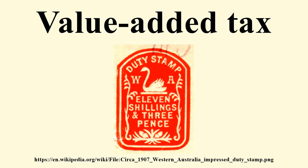In theory, sales tax is normally charged on end users. The VAT mechanism means that the end user tax is the same as it would be with a sales tax. The main disadvantage of VAT is the extra accounting required by those in the middle of the supply chain. This is balanced by the simplicity of not requiring a set of rules to determine who is and is not considered an end user. When the VAT system has few, if any, exemptions such as with GST in New Zealand, payment of VAT is even simpler. A general economic idea is that if sales taxes are high enough, people start engaging in widespread tax evading activity.